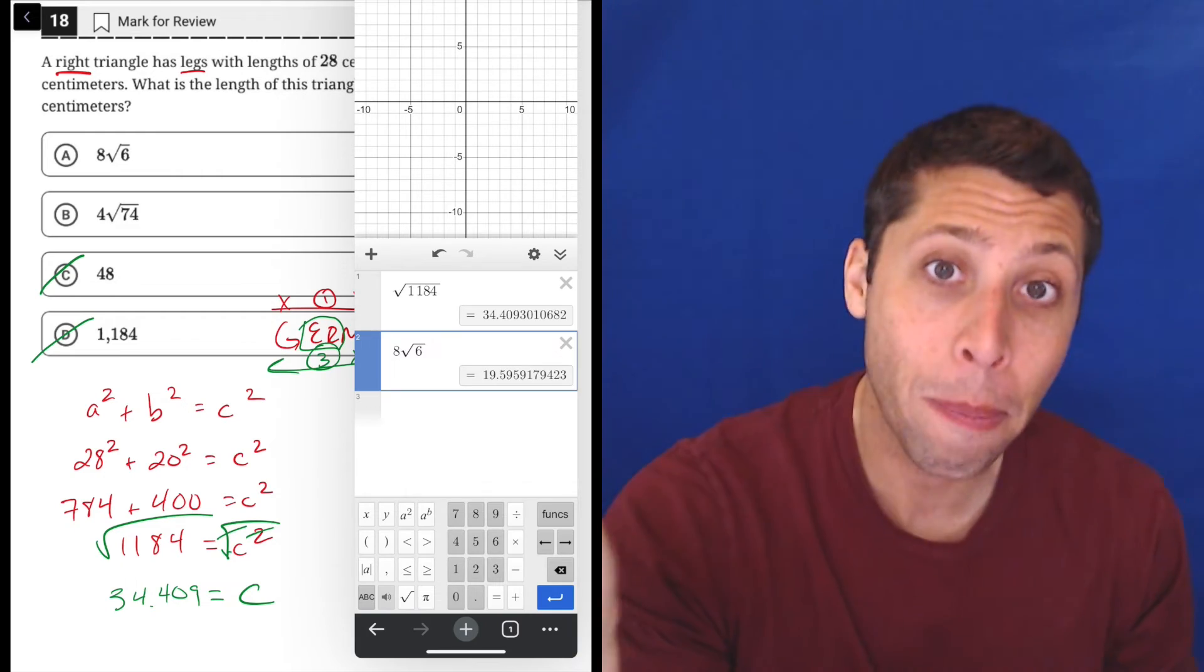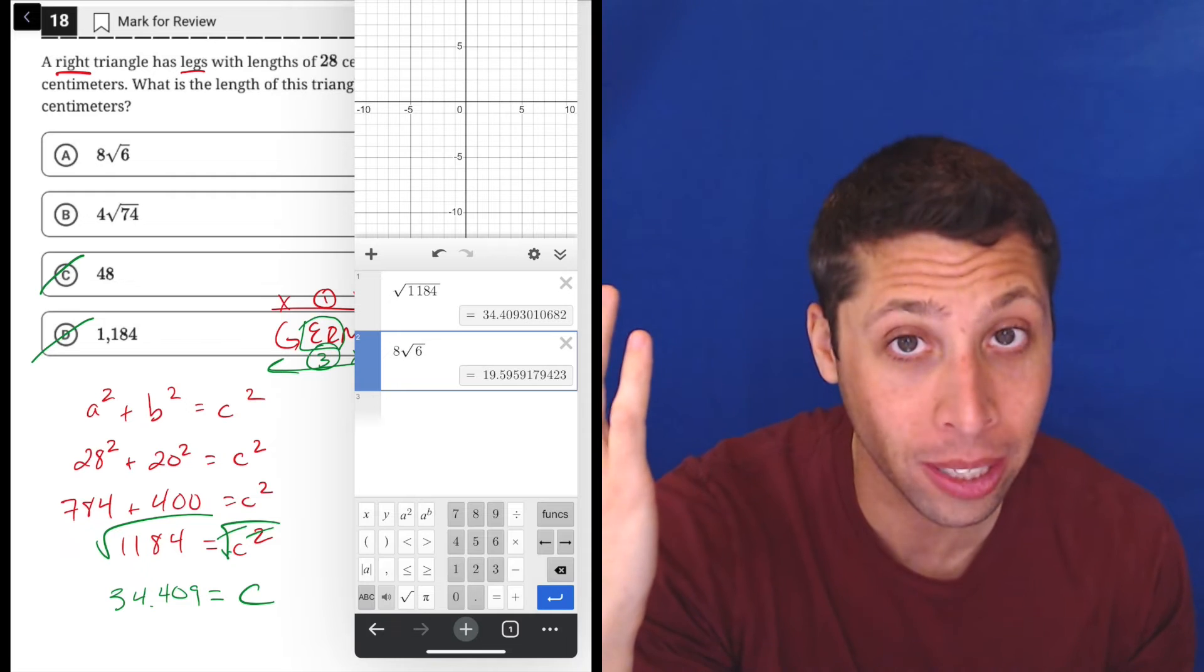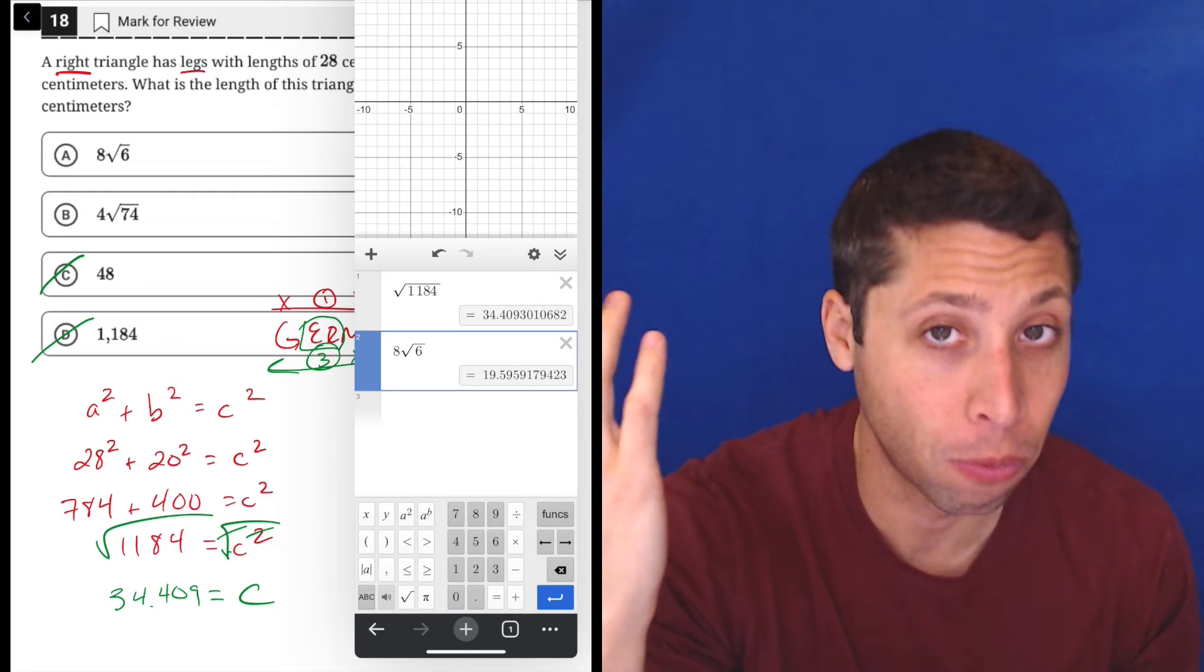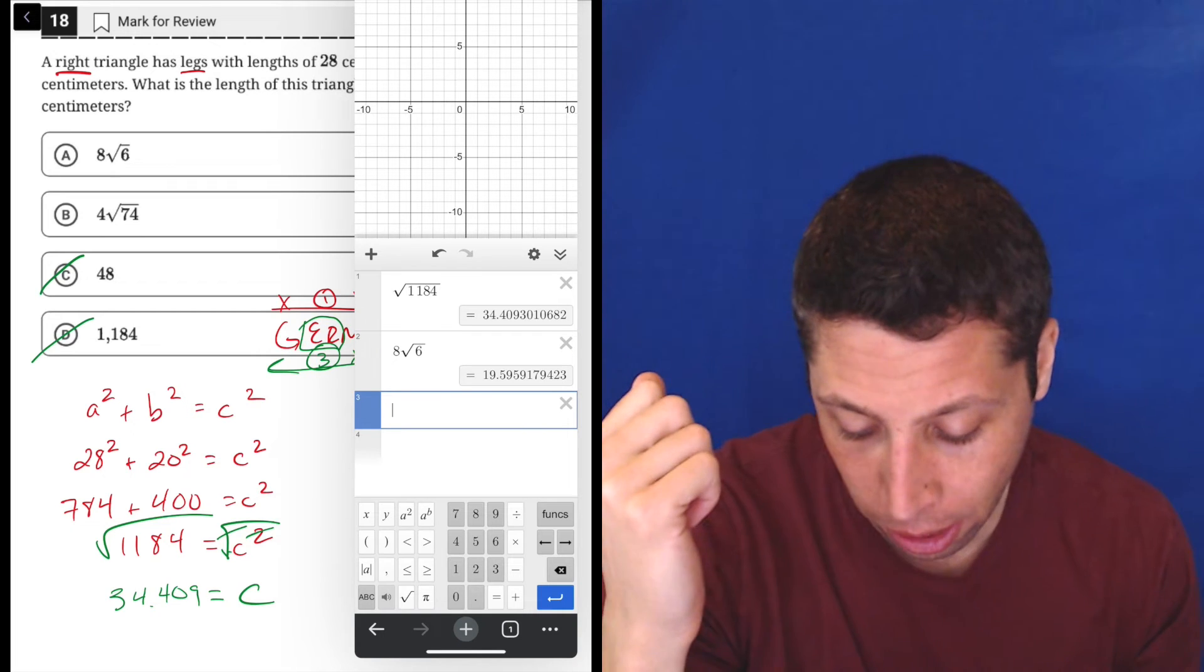Now look, that gives us a decimal. It gives us a messy decimal that is not the same messy decimal that we had before. Radical 1184 was 34.4, this is 19.59. So let's do choice B, four times the square root of 74.